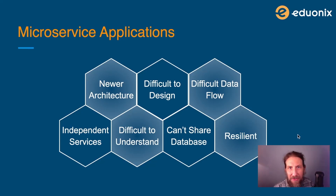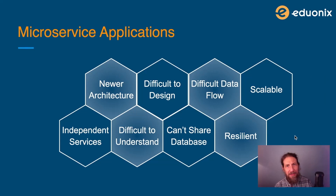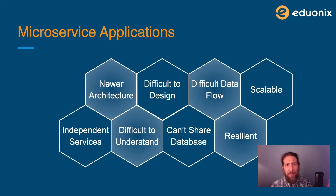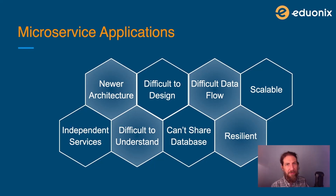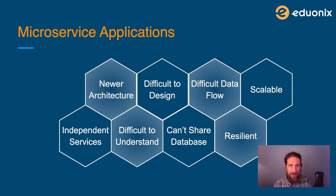Microservices can be much easier to scale than a monolithic application. With a monolithic application, you have to scale the whole thing whether it needs to be scaled or not. But with microservices, you can scale just that part of the application which needs to be scaled, simply by duplicating parallel clones of the microservice. This makes it much quicker and easier to deploy when you are scaling.